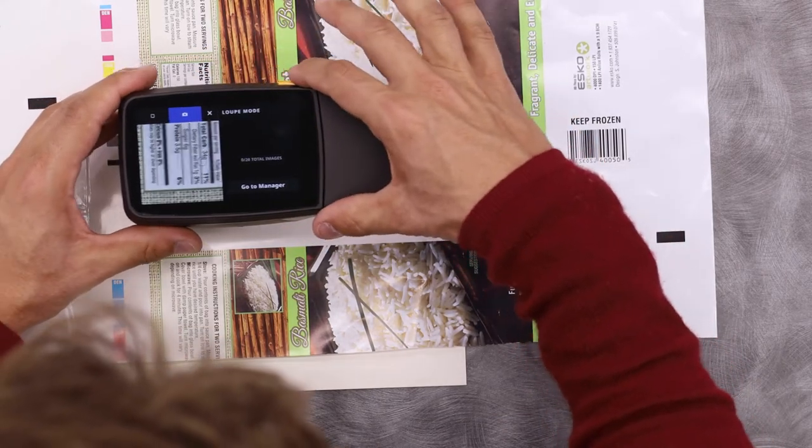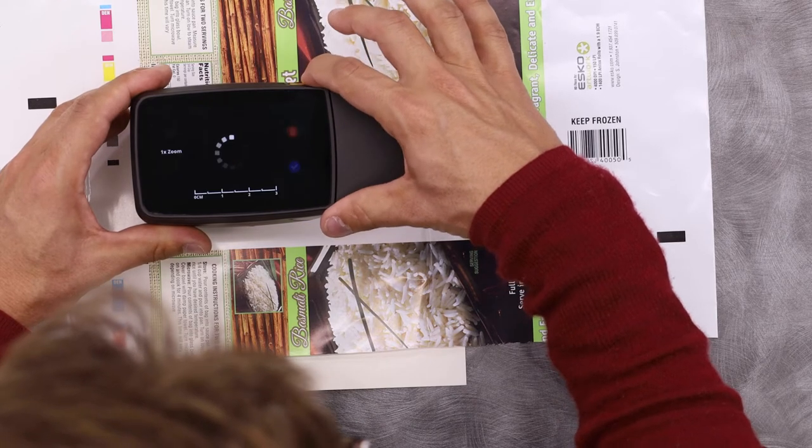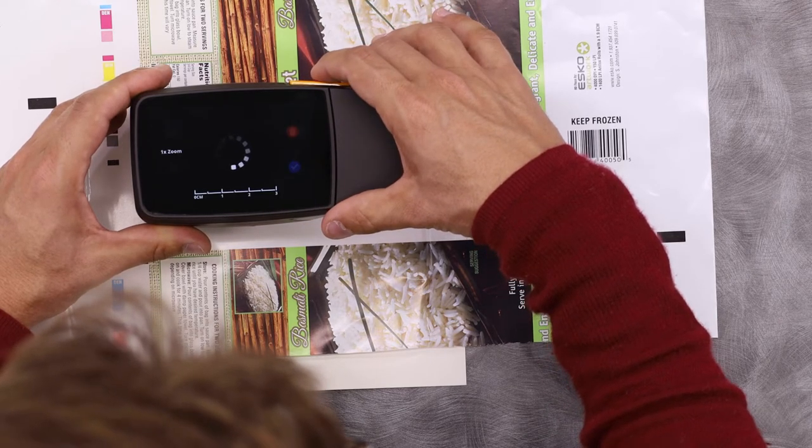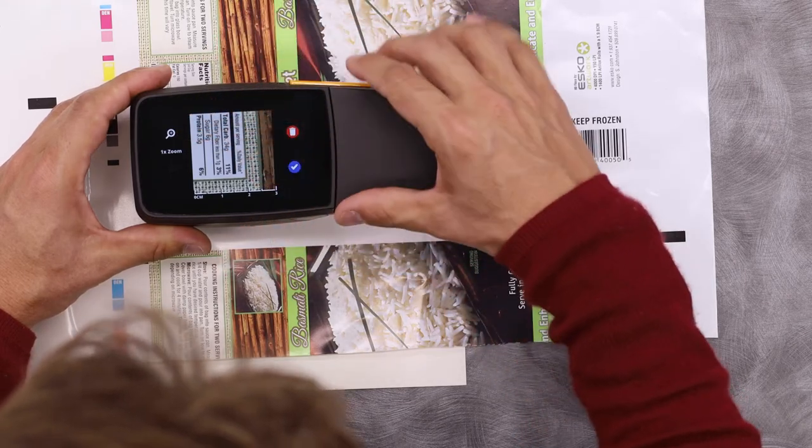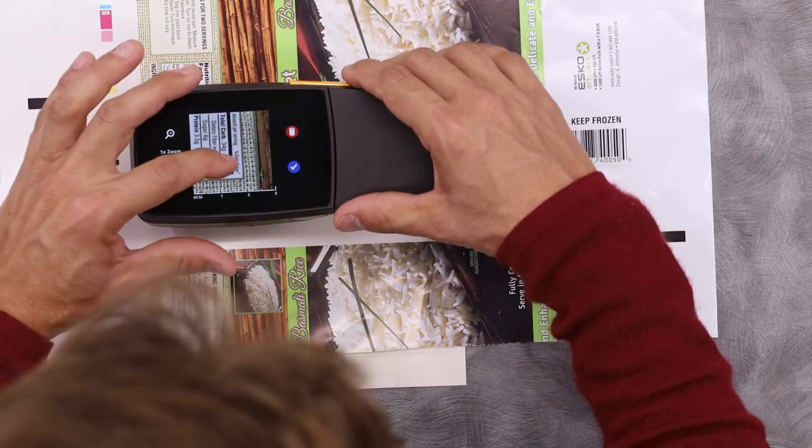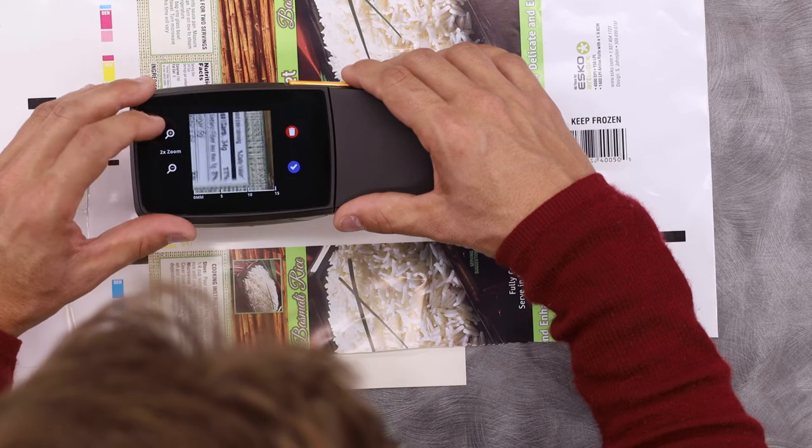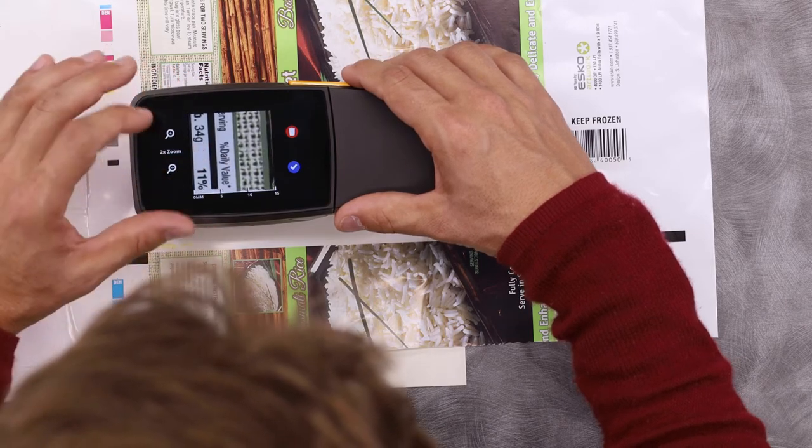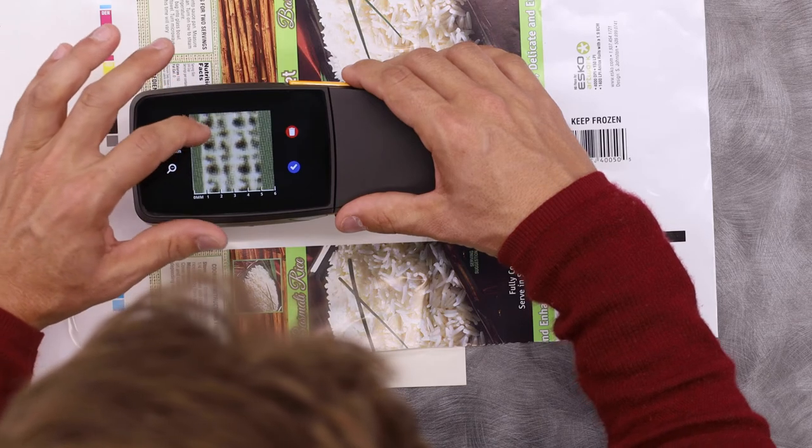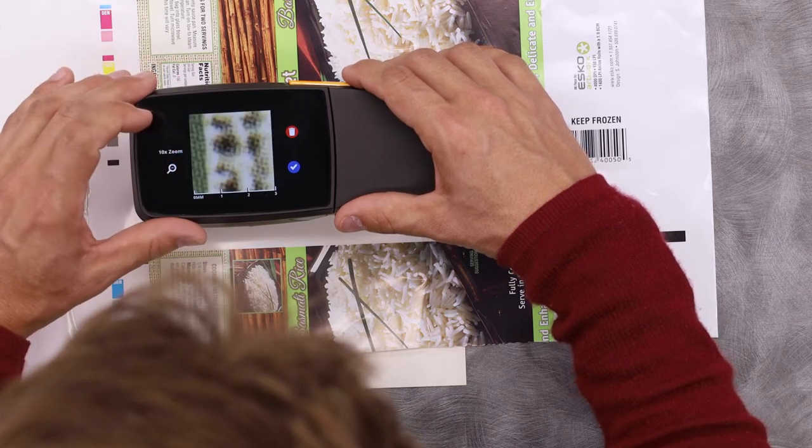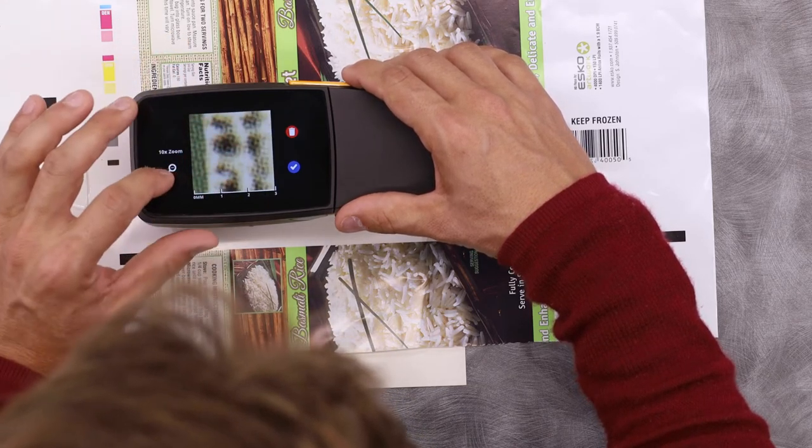I activate it simply by pushing the same measurement button that you use to take a reading. Now I've captured the image. I can pan around. If I zoom in, this allows me to zoom in on my sample.